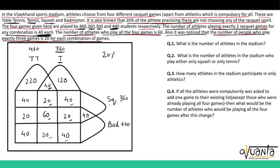Similarly, for the squash set the total is 360. The sum of known regions: 40, 20, 60, 60, 40, 100, 100, 20, 100 and 20 gives 240. So the missing area will also be 360 minus 240, that means 120.